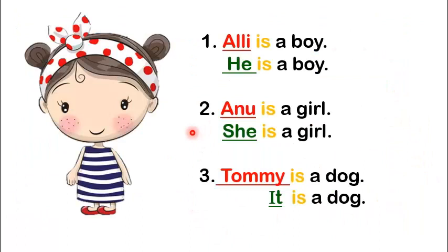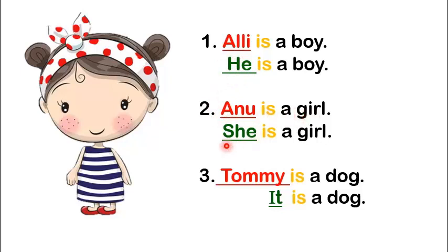Look at this. Ali is a boy. We can also say, he is a boy. He is a pronoun. Anu is a girl. We can also say, she is a girl. She is a pronoun.